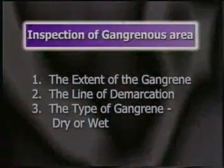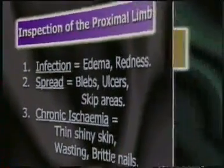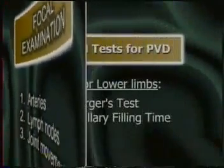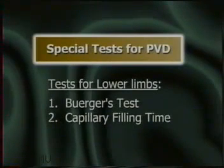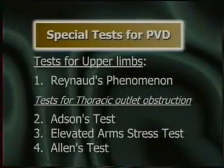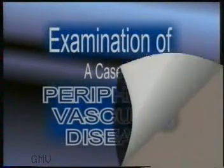To conclude, we started the examination of a case of ischemic limb with a careful inspection of the gangrene and the ischemic limb. Then we examined the arteries, lymph nodes and the movements — palpating the arterial pulse at various levels and auscultating over it for a bruit. Lastly, we performed the special tests for peripheral vascular disease: in the lower limb, Buerger's test and capillary filling time; in the upper limb, Raynaud's phenomenon, Adson's test, Elevated Arms Stress Test and Allen's test. This completes the study of examination of a case of peripheral vascular disease.